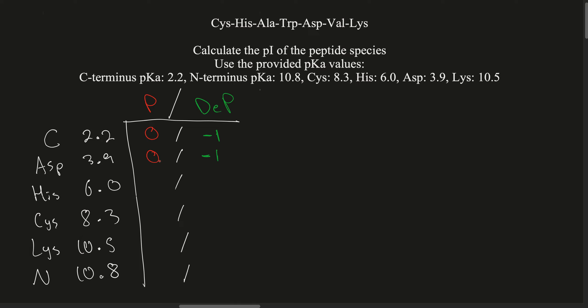I want to find the middle pH at which these charges add up to zero. Say I pick a pH between the C-terminus and aspartic acid, like pH 3 — it's going to cut right here. The C-terminus, for the most part, is going to be deprotonated, but everything else is going to be protonated because this pH is lower than the rest. So we have a negative one plus positive one, positive one, positive one — a total charge of positive two. That means pH 3 is way too low.